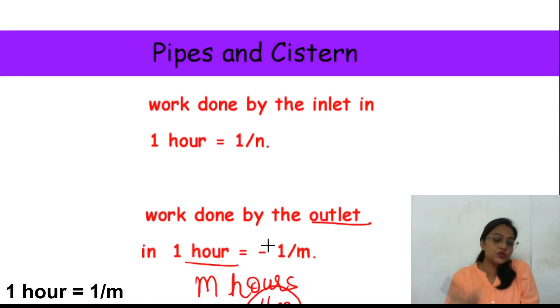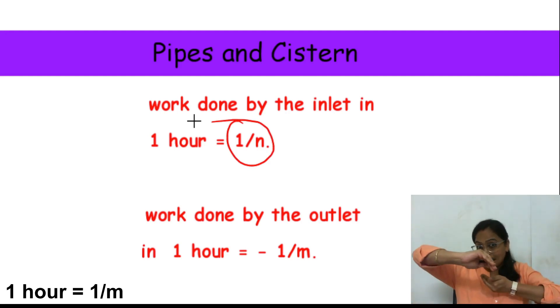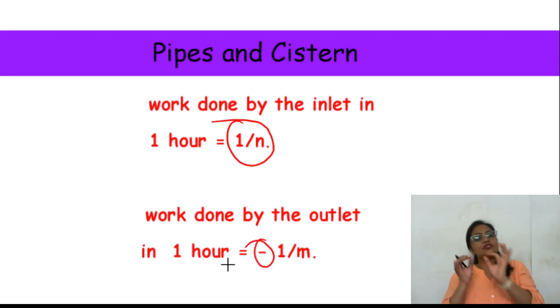Yaha minus 1 by m kyu bola gaya hai, kyunki isko aap kaise yaad rakh sakte hai, dekhiye, inlet pipe toh kaam bana raha hai, paani bharta hai, right? Aur outlet pipe kya kar raha hai, kaam bigad raha hai, aisa kehlo, toh bigad raha hai, matlab minus kar raha hai, right? Toh isi liye isko minus mein likhte hai, main aise yaad rakhti hai.